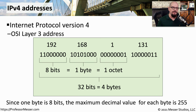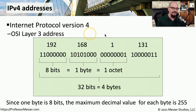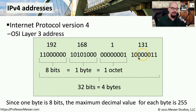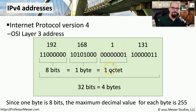Let's break apart this IPv4 address and see how it's constructed. This is our Internet Protocol version 4 address, sometimes referred to as an OSI Layer 3 address. For example, here's an IP address of 192.168.1.131. If you convert that decimal value into binary, you'll see that the IP address consists of four separate groups of eight bits apiece — eight bits in the first group, eight bits in the second, eight bits in the third, and eight bits in the fourth group. You might also hear this referred to as a byte or an octet; they are all exactly the same thing. Put four of those groups together and you have 32 bits, or four bytes — that is what defines an IPv4 address.